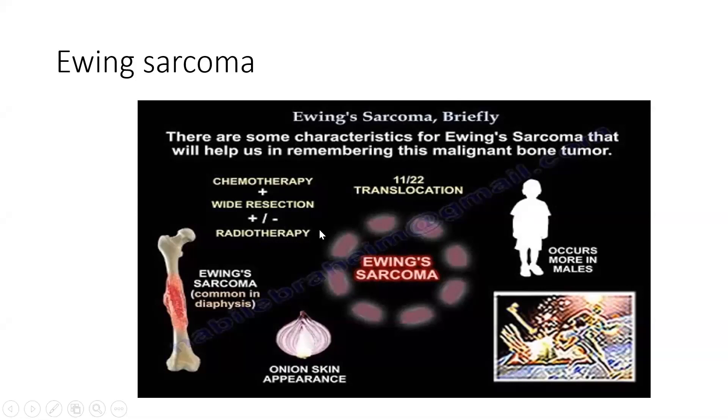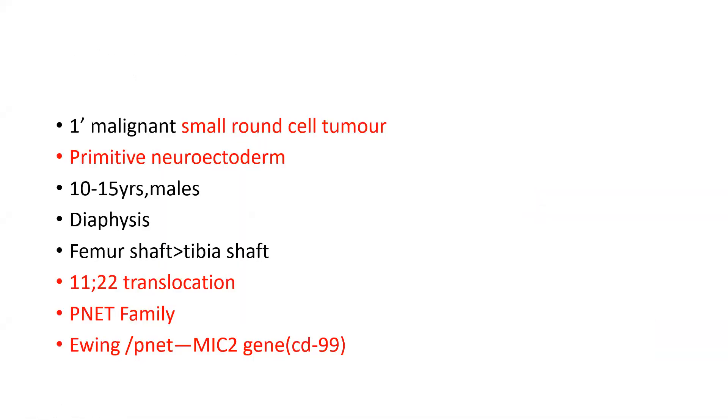Treatment includes chemo, radiation, and radiotherapy. Ewing's sarcoma is a primary malignant round cell tumor.